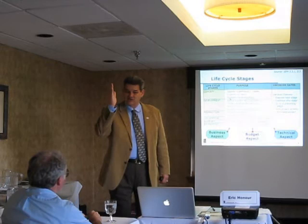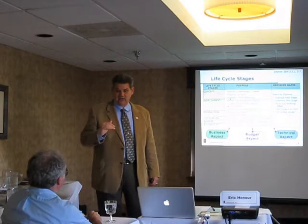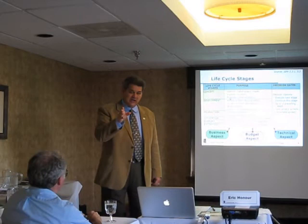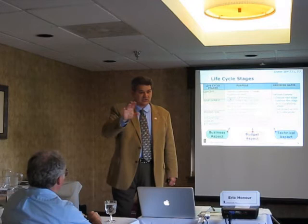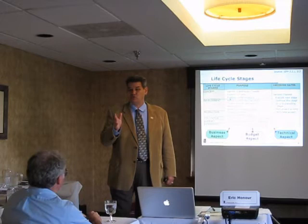So we've got these six life cycle stages. Between the stages of the life cycle are decision gates. The handbook doesn't name these decision gates specifically, but it does say what happens at them. At the end of every stage, you look at all aspects of the project and the system and make a decision about what you're going to do.